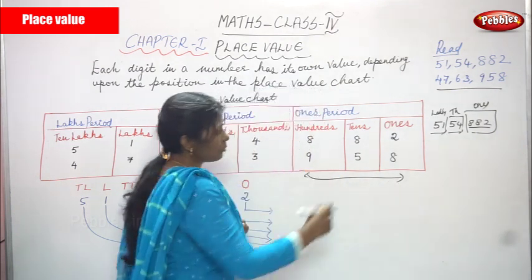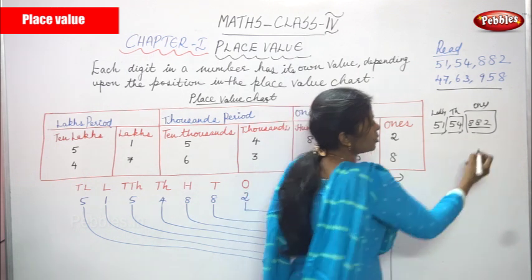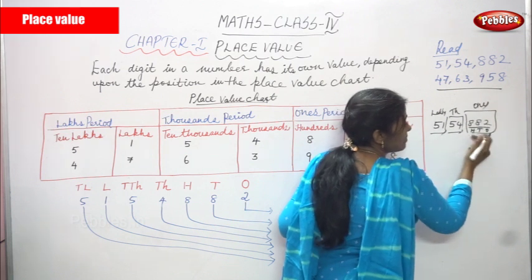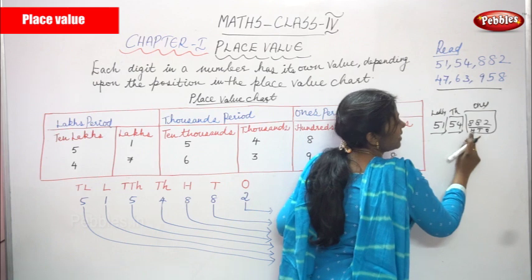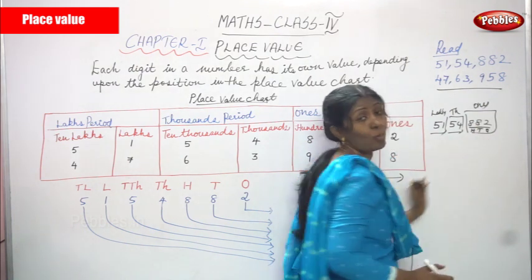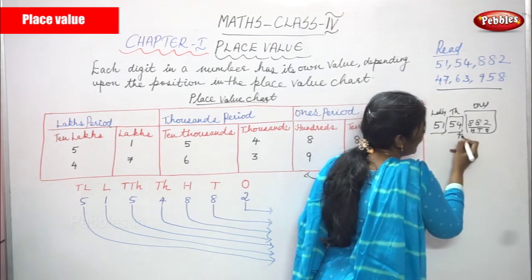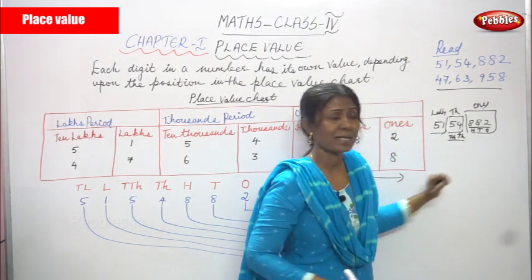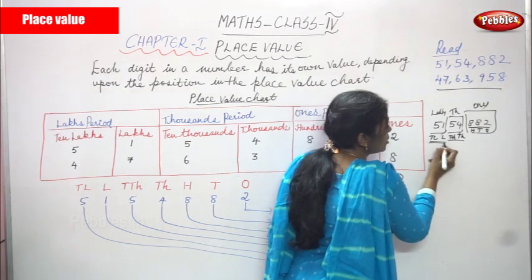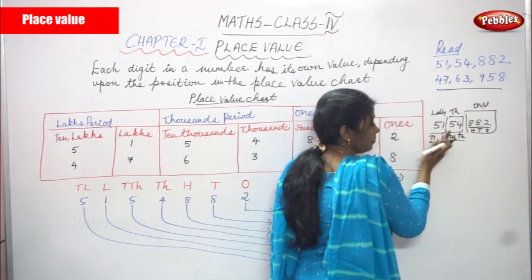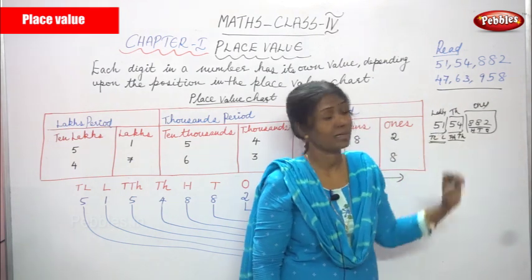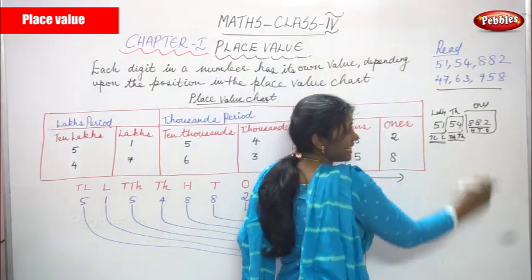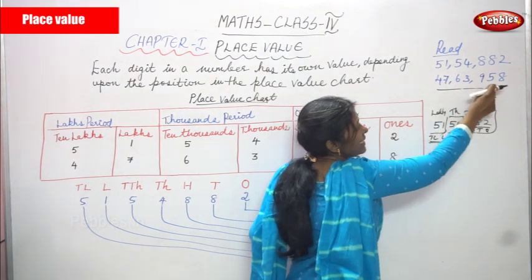Again I'll repeat. For 51,54,882: O means ones, T means tens, H means hundreds - these combine together as the ones period. TH means thousands, TTH means ten-thousands - this is completely the thousands period. Then lakhs and ten-lakhs combined together is the lakhs period. So how to read: 51,54,882. Next number: 47,63,958.